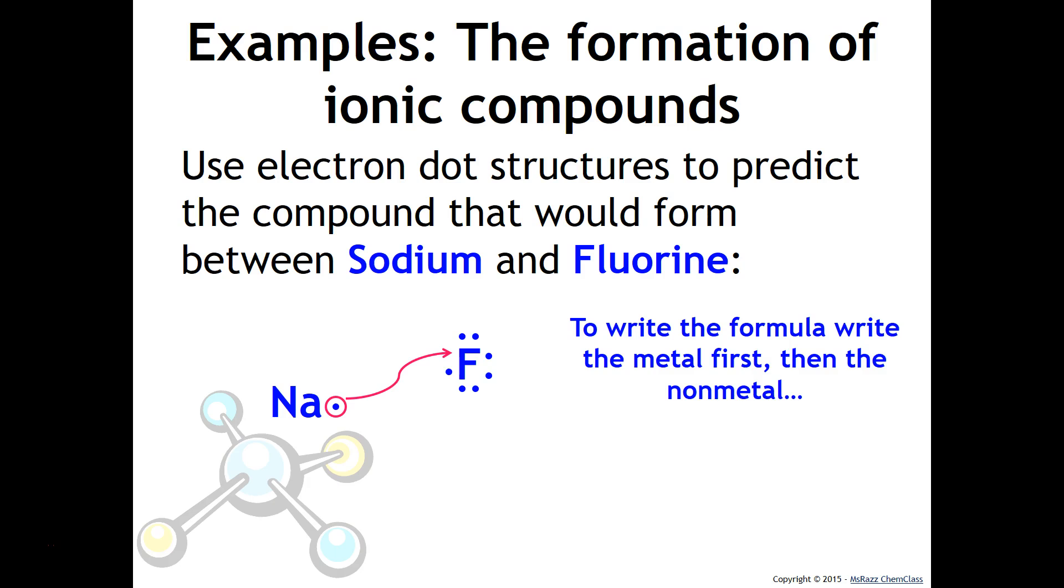To write the formula for this particular model, you want to make sure that you write the metal first and then the nonmetal. So that is why we will write NaF. We also write NaF because we can see that it is in a one-to-one ratio. Sodium loses one electron and fluorine will gain that one electron.